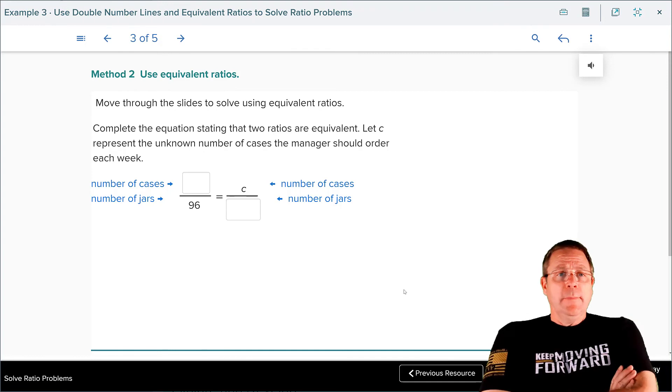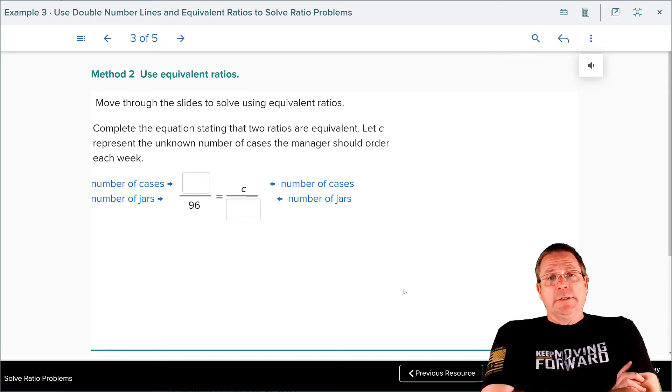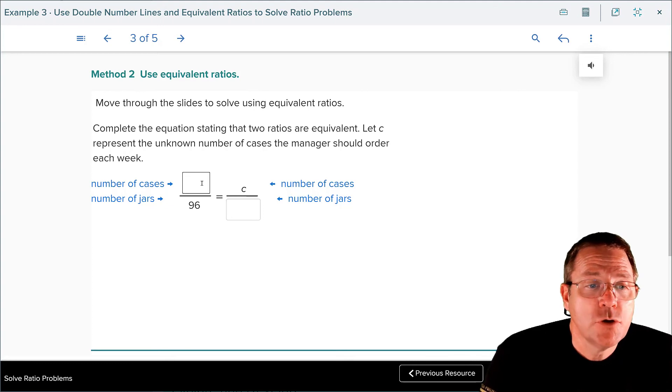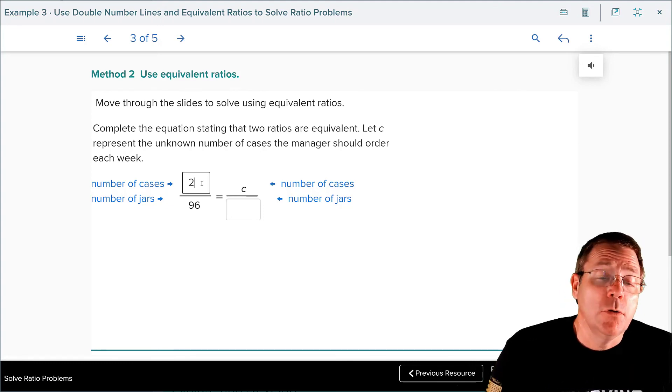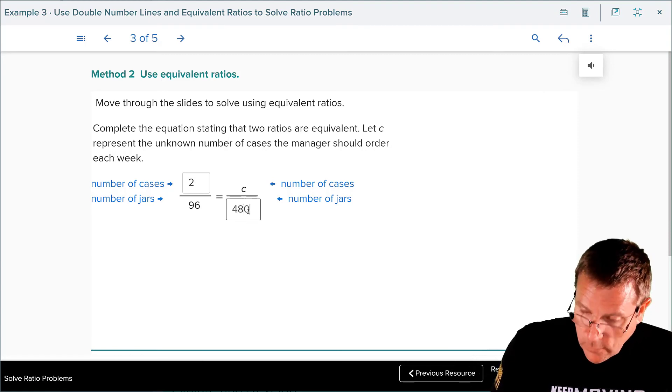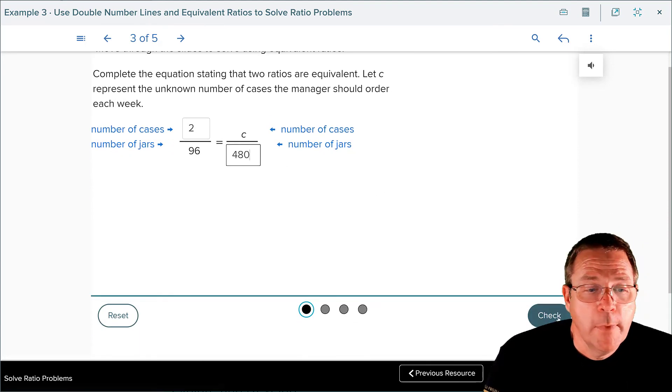Now, we're going to do the same thing, only we're going to set it up using equivalent ratios. We're going to create the equation that states two ratios are equivalent, otherwise known as a proportion, and we're going to let C represent the unknown number of cases a manager should use. We have the number of cases, which is 2, is equal to 96 jars. And we also know that we need to get up to 480 jars total. We're going to check it. Those parts check. Good.